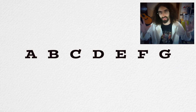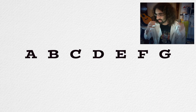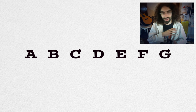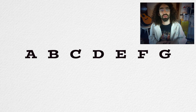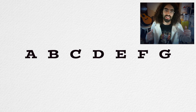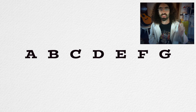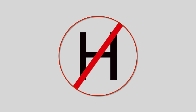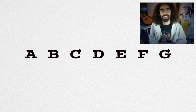In music theory, we have an alphabet, and all of the concepts I'm going to explain from here onward use this alphabet. We have the letters A, B, C, D, E, F, and G to name and refer to notes. It doesn't go past G — there's no H or P or anything like that.